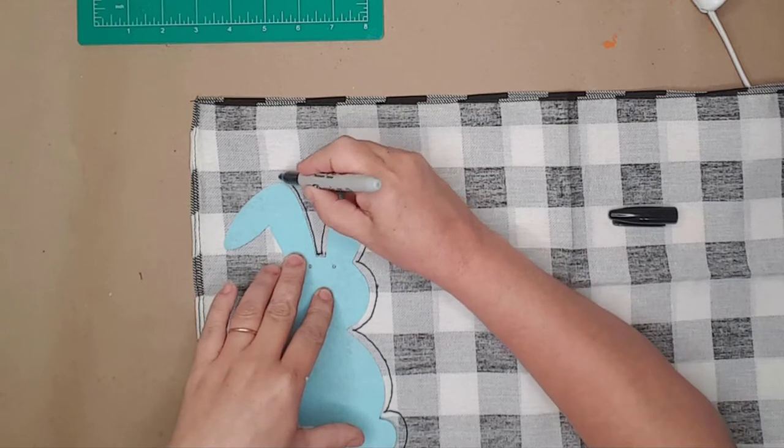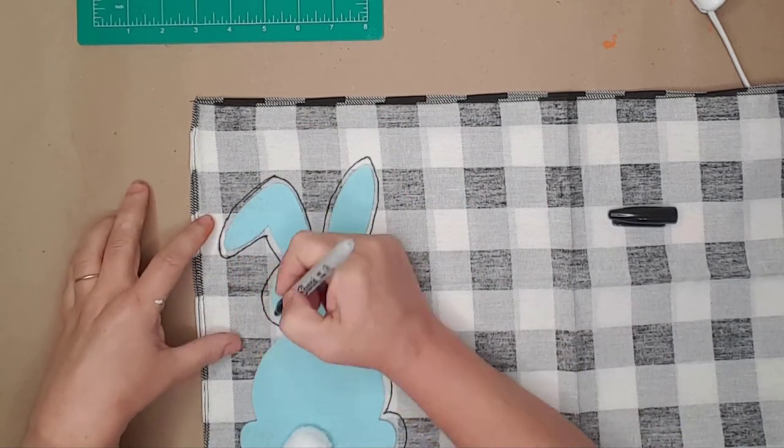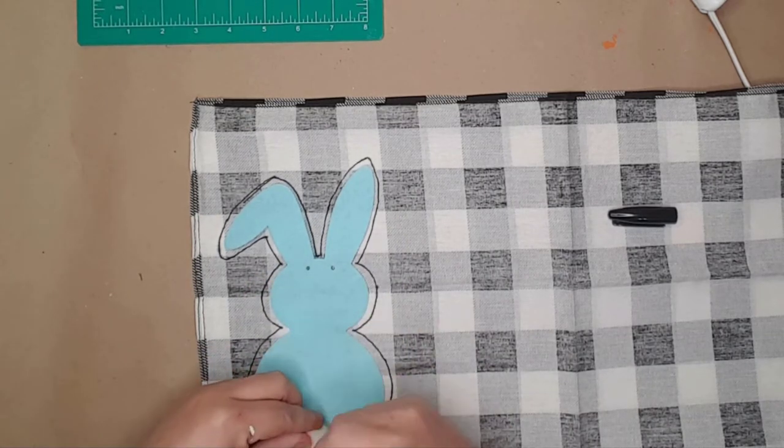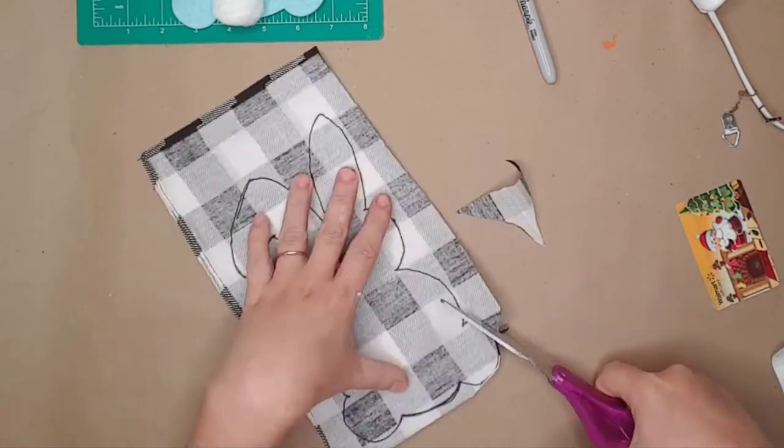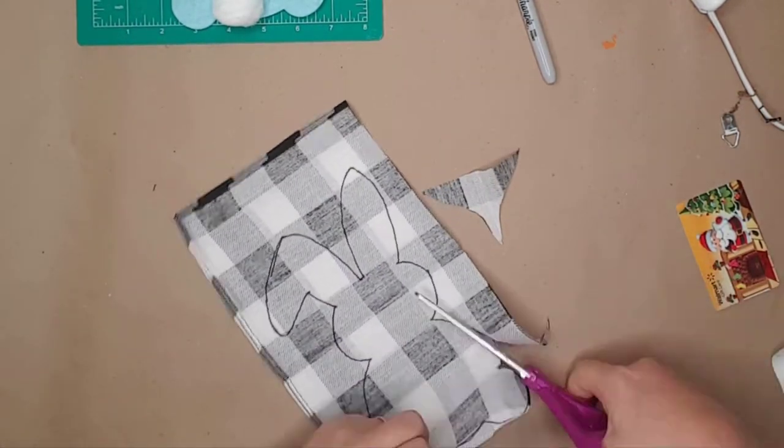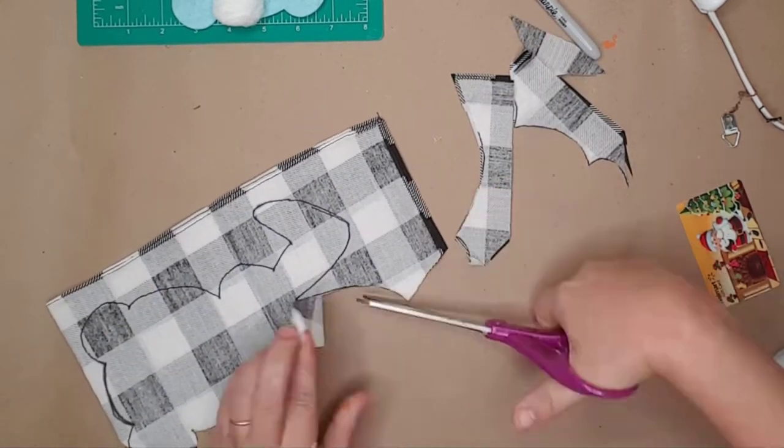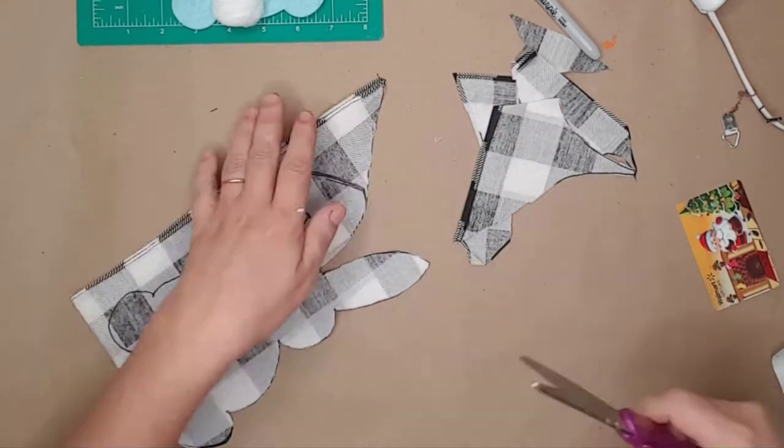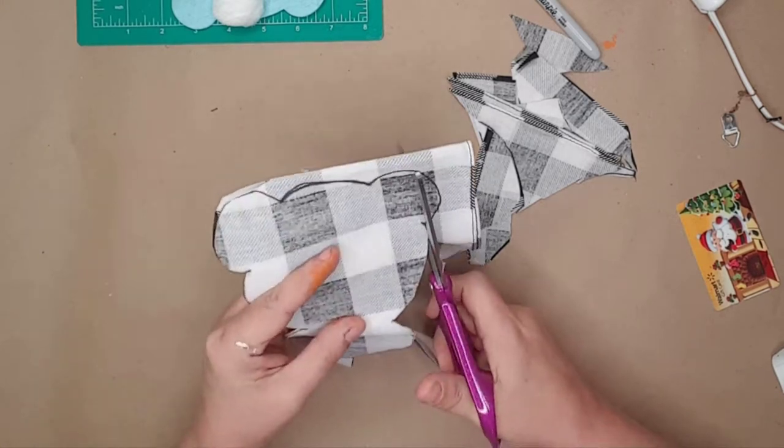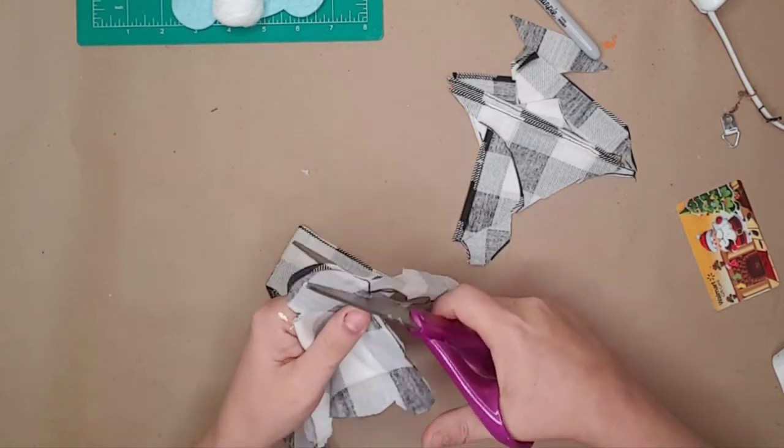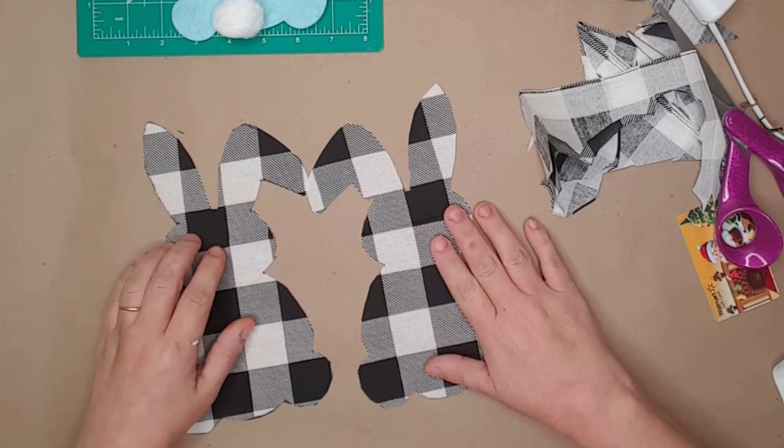I actually folded the bandana in half before tracing so I would have two bunnies cut just the same. After tracing it I cut the bunny on the lines that I had traced, and yes I finally purchased a decent pair of scissors and I keep reminding myself to use them only on paper and fabric. After I cut the bunny I have two just the same size.